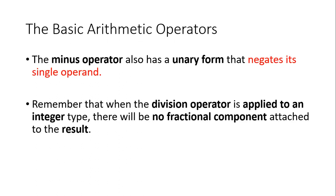One operator with special meaning is the minus symbol. If you write '-x' in an expression, the minus will negate the value of x. Even though you can write 'x - y', where minus works on two operands making it a binary operator, when you write '-x', it works on only a single operand, so it acts as a unary operator.